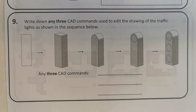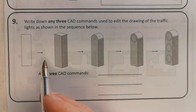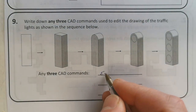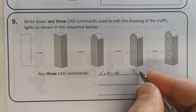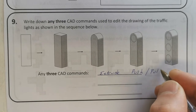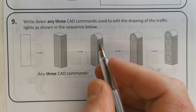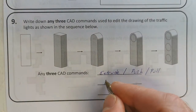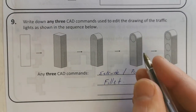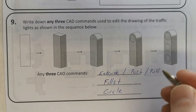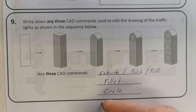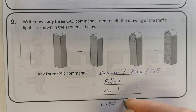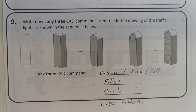Question nine: some CAD commands. To get from that to that, you could extrude, or push/pull, depending on what CAD package you're using. This would be a fillet, that would be a circle, and that would be a linear pattern — it may be called array as well, depending on the package.